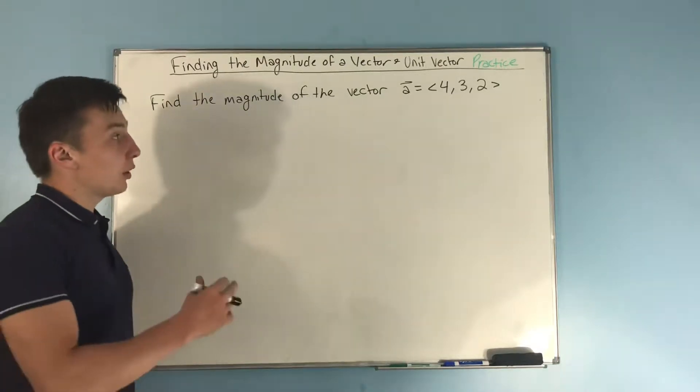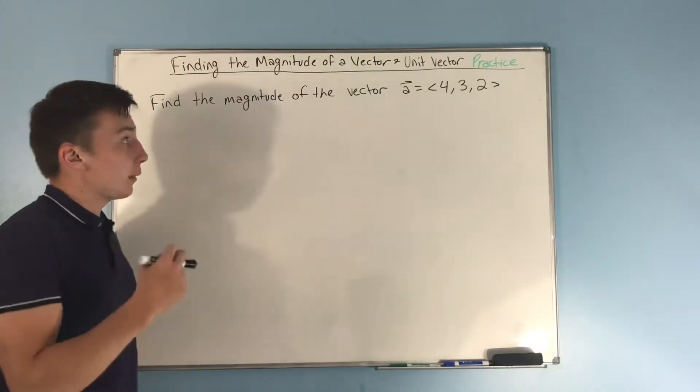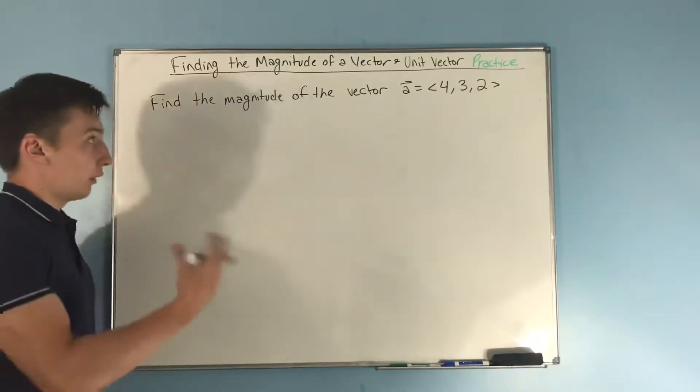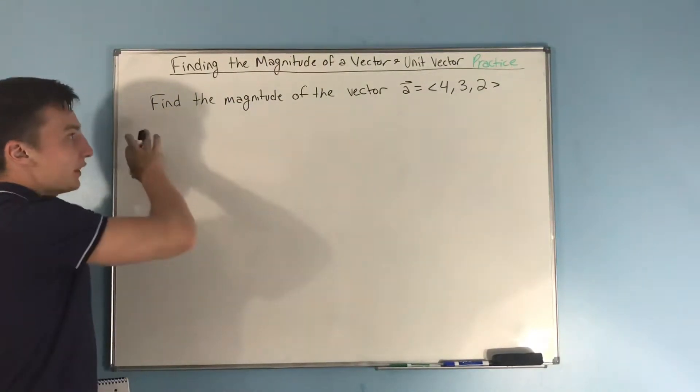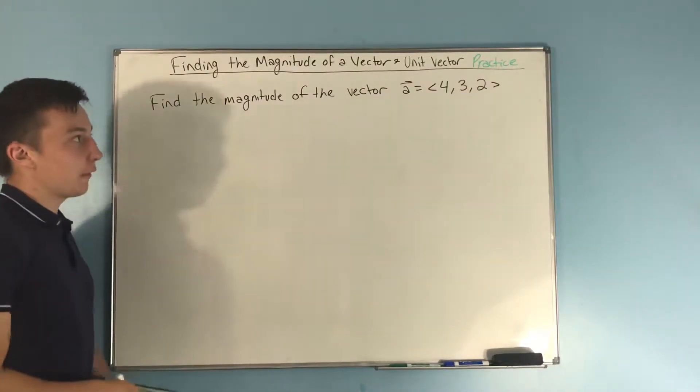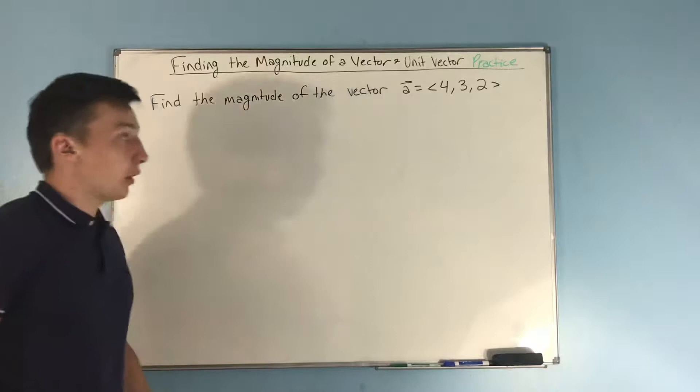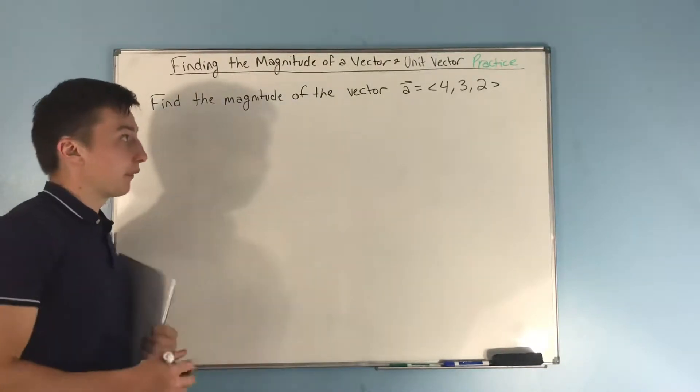All right, so in this video, we're going to be doing some practice with finding the magnitude of a vector and the unit vector for a vector. So first, we want to find the magnitude of the vector a, which is given by <4, 3, 2>.